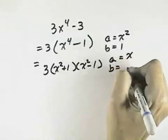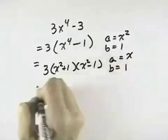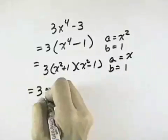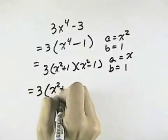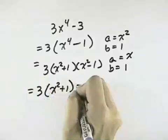a is the square root of the first term, which is x. b is the square root of the second term, which is 1. So our first factor is 3. Our second factor cannot be broken down any further, so we leave x squared plus 1.